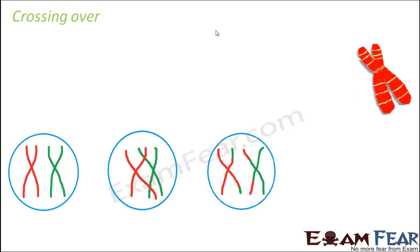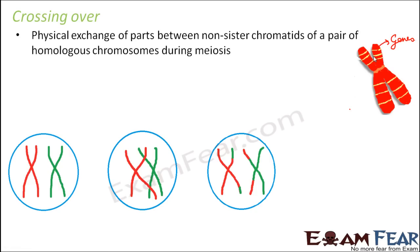Let us talk about crossing over. Genes are the carriers of inheritance and genes are located on the chromosomes. When meiosis happens, chromosomes undergo a change, and when chromosomes undergo a change, the genetic material also changes. So basically during crossing over, there is physical exchange of parts between the non-sister chromatids of a pair of homologous chromosomes during meiosis, and this process is known as crossing over.